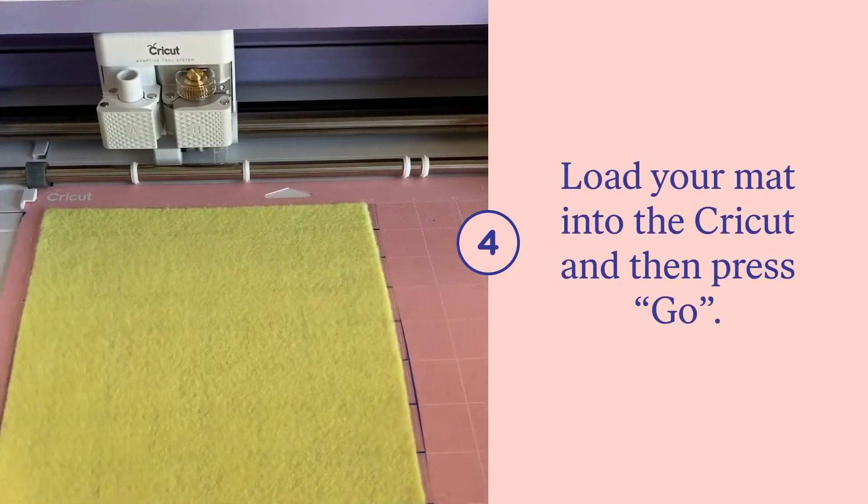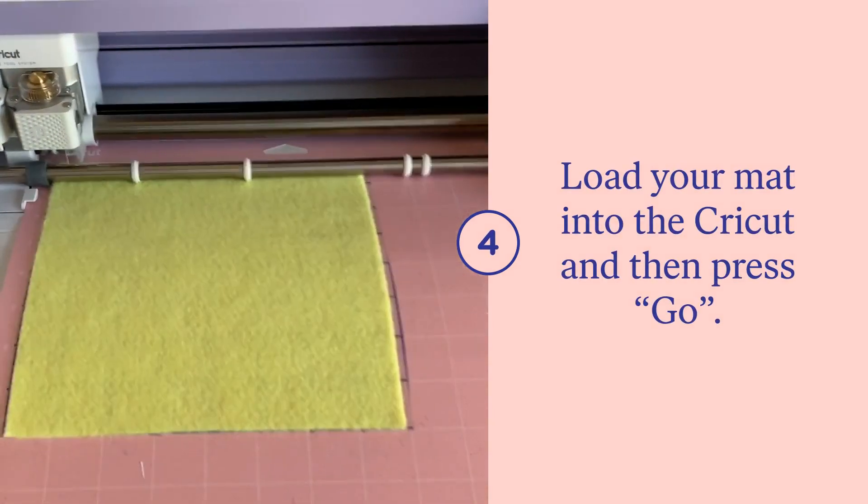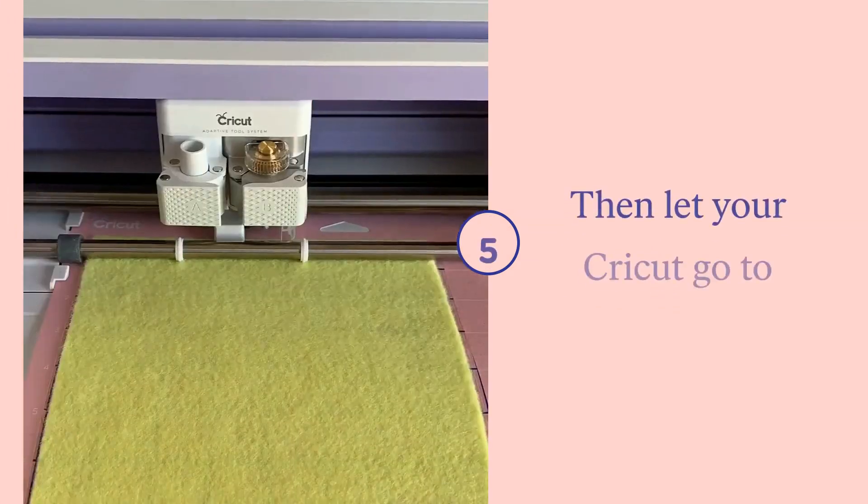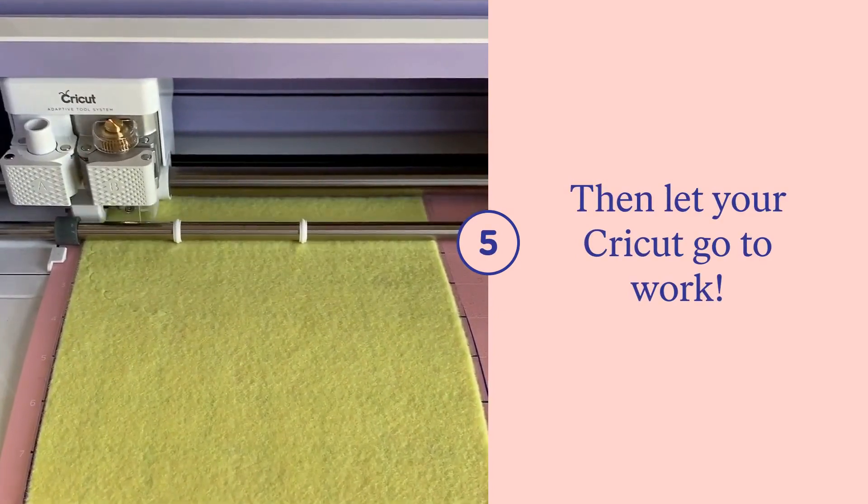Load your mat into the machine and then press the go button. Then let your rotary blade cut out all your flowers.